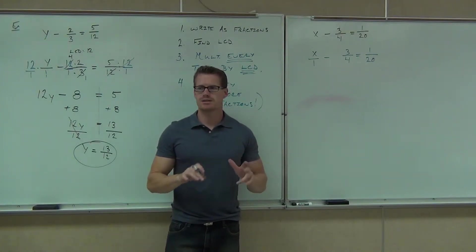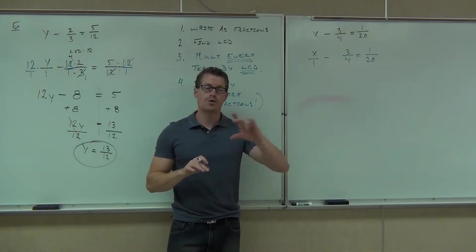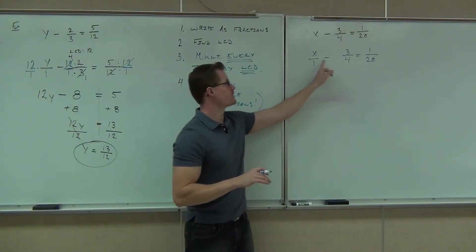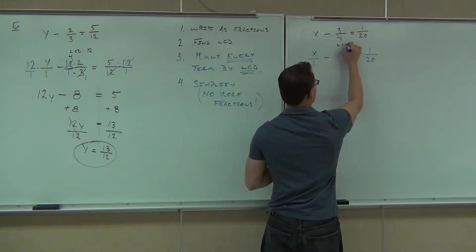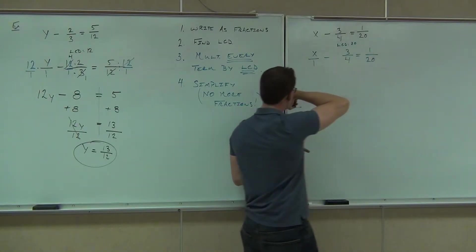The next step is to find the LCD. The LCD must contain all three of your denominators. So this one, this one, and that one. What is your LCD here? 20. Good. LCD is 20.